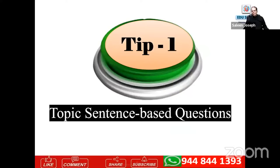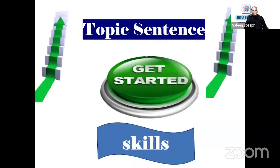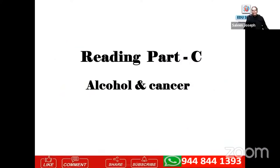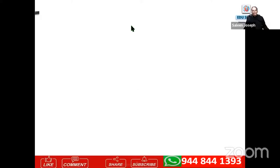Tip one — topic sentence based questions. This is the first type of question. We'll be looking at topic sentence skills using a reading Part C passage on alcohol and cancer. I'll be taking examples from different official materials as well as other materials from the official OET site. Thank you for allowing me to use these materials for teaching purposes — so you are sure these things happen in real life.